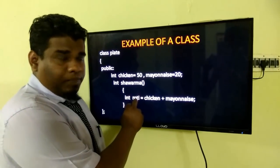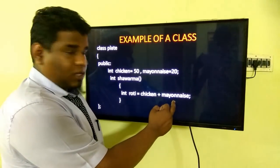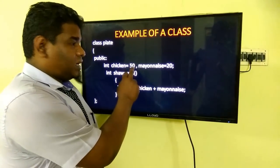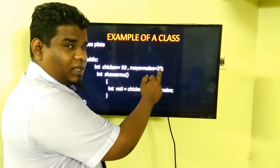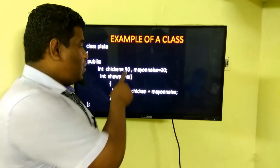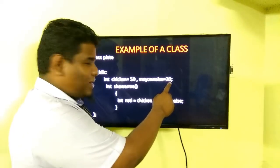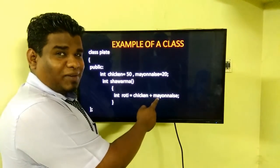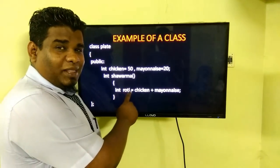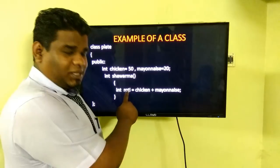Here I have the variable name called 'roti'. Roti is equal to chicken plus mayonnaise. What is the value of chicken? Chicken is 50. And the value of mayonnaise is 20. So as we said, the variable has a value: 50 and 20. Join together, 50 plus 20 will form 70, and that will be stored in the variable called 'roti'.